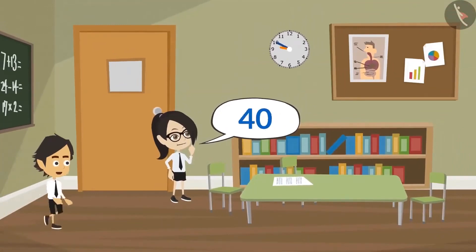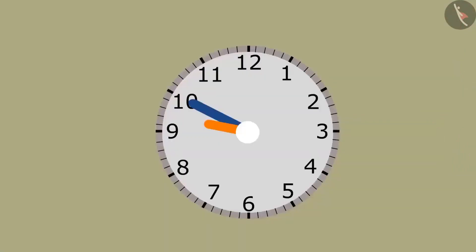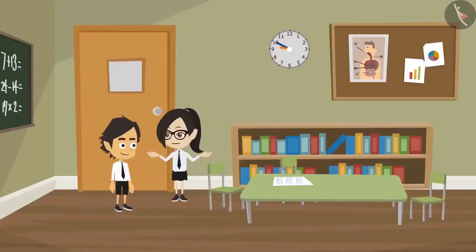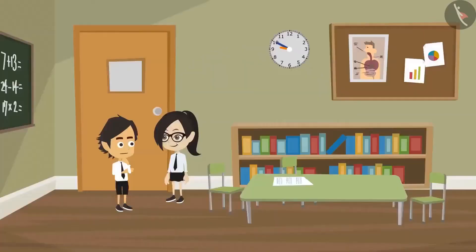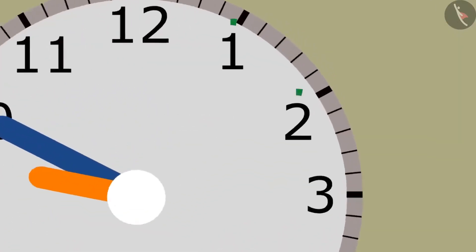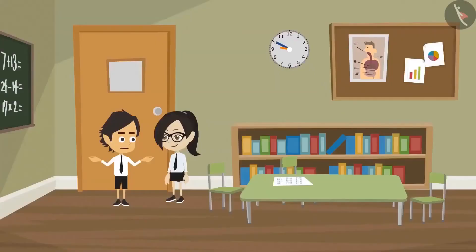What are you counting, Vandana? I am counting the minutes on the clock. You interrupted me and now I have forgotten. I was finding out how many minutes have passed. How are you counting the minutes? Look at the numbers on the clock — the small markings in between them tell the minutes. These have to be counted to find out the minutes.